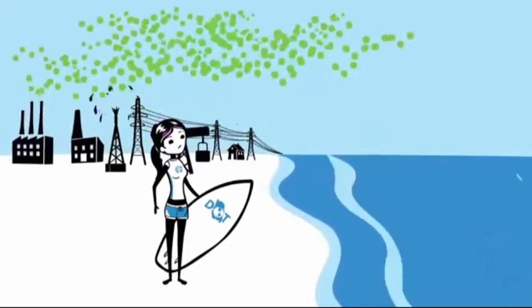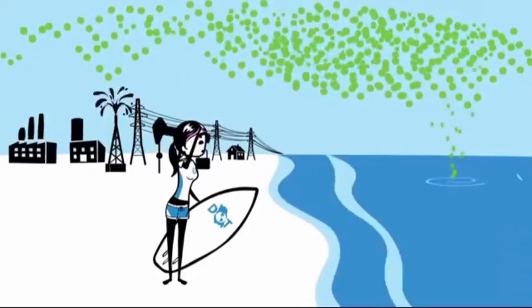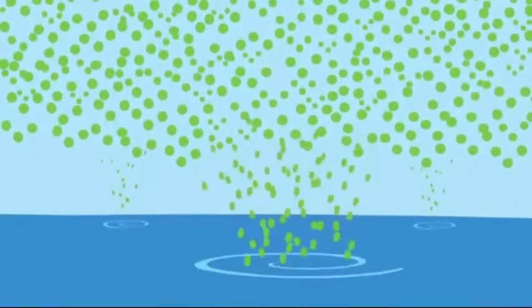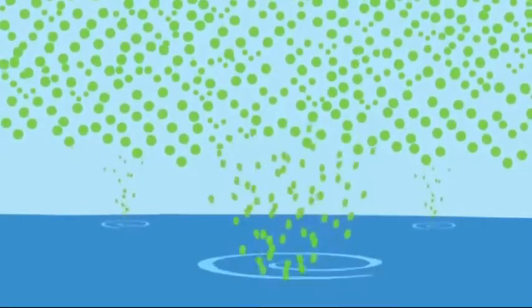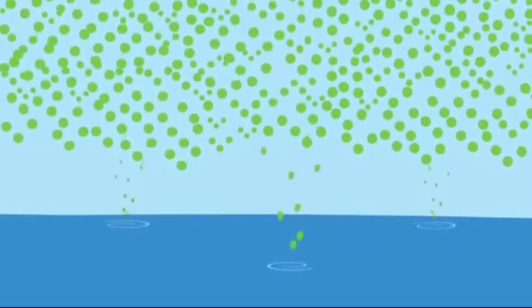Since we started burning fossil fuels, the ocean has absorbed about half of all the CO2 we humans have put out. That's why it's called the planet's biggest carbon sink. Now this is good because it's kept a lot of CO2 out of the atmosphere. But as the ocean warms, it takes up less and less CO2.